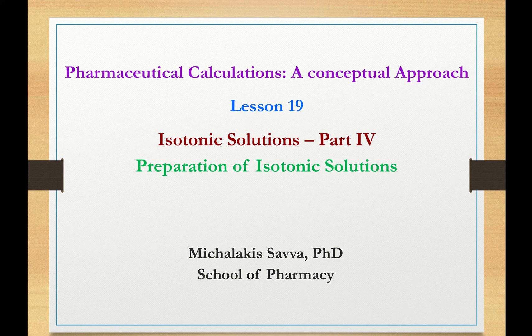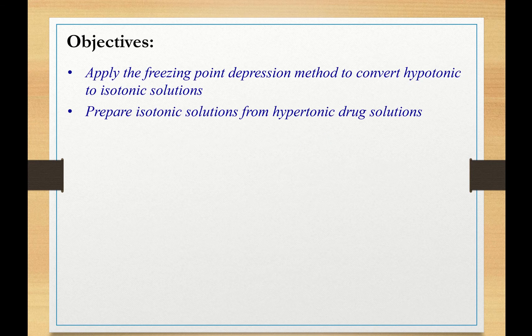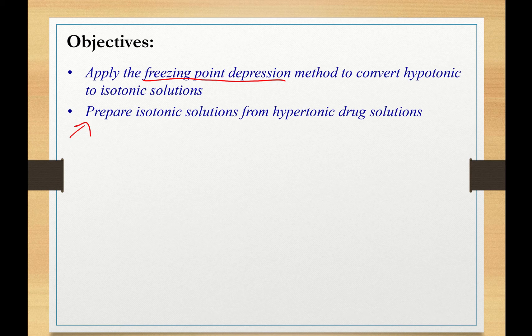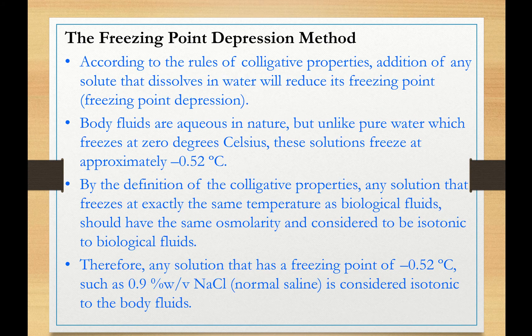Welcome to Pharmaceutical Calculations, a Conceptual Approach, Lesson 19, Isotonic Solutions, Part 4: Preparation of Isotonic Solutions. In today's lecture, we're going to discuss two more methods of preparing isotonic solutions. The first one uses the colligative property of freezing point depression to convert hypotonic drug solutions to isotonic. The second is a newer method to prepare isotonic solutions from hypertonic drug solutions. Let us start with the first method: the freezing point depression method.